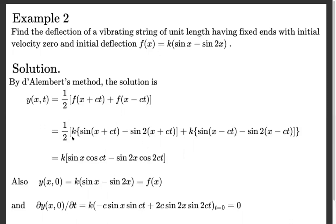Substituting f(x) = K·(sin x - sin 2x): f(x + ct) = K·[sin(x + ct) - sin(2(x + ct))], and f(x - ct) = K·[sin(x - ct) - sin(2(x - ct))]. So y(x, t) = (1/2)·K·[sin(x + ct) - sin(2x + 2ct) + sin(x - ct) - sin(2x - 2ct)].